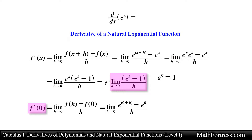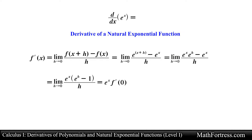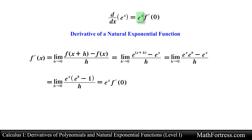As a proof, we confirm this by finding the derivative of the natural exponential function evaluated at x equals 0. Anything raised to the power of 0 is equal to 1, and we obtain that same limit expression. Now that we know this limit represents the derivative at x equals 0, we substitute it with f prime of 0. The derivative of the natural exponential function equals e to the x times f prime of 0, meaning the rate of change is proportional to the function itself, where the constant of proportionality is the slope of the tangent line at x equals 0.